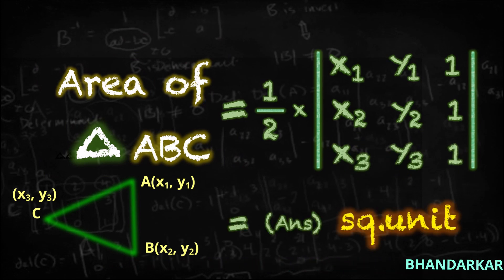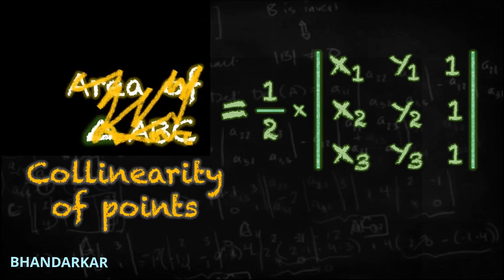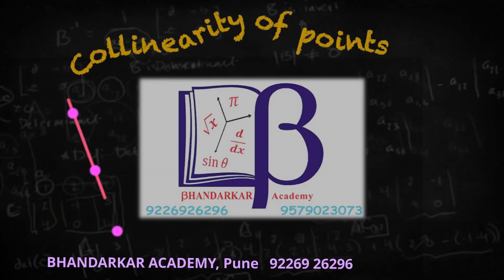Answer ko unit square mein. Then, for collinearity of points, one half nikaal dena bas.